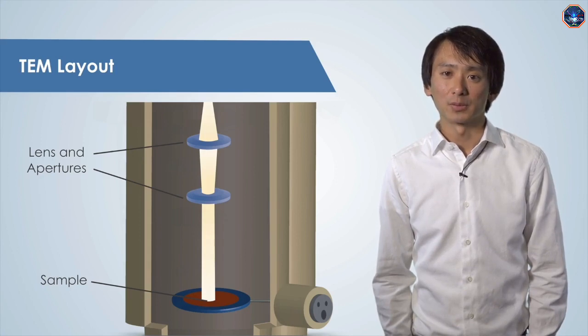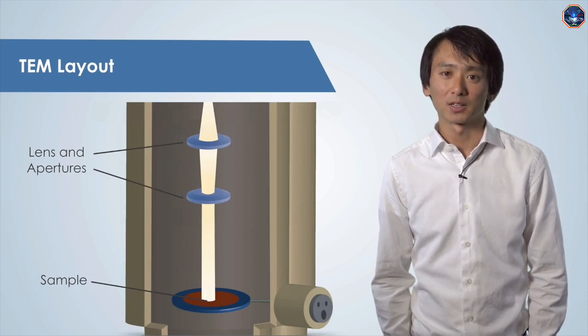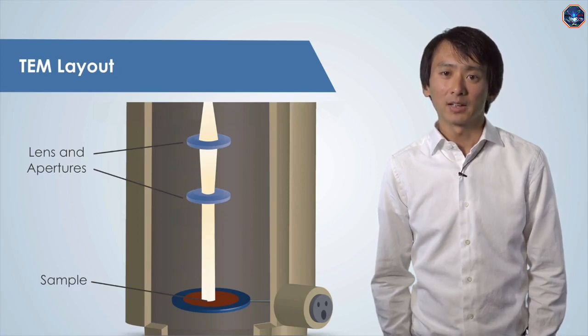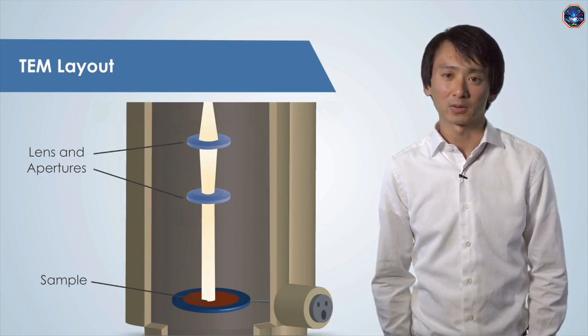As the electrons travel through the sample, they will interact with it in a variety of ways. Some may be transmitted, some may be scattered. In TEM, we are typically concerned with the electrons that are transmitted. The transmitted electrons and the electrons energy gives us information about the sample and help generate the image.